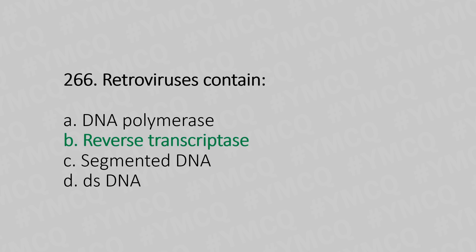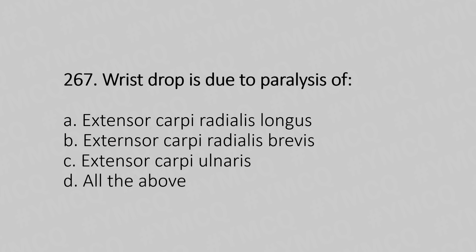Now let's move to question number 267. Wrist drop is due to paralysis of: Option A, Extensor Carpi Radialis Longus; Option B, Extensor Carpi Radialis Brevis; Option C, Extensor Carpi Radialis; Option D, All of the above. And the answer is Option D, All of the above.